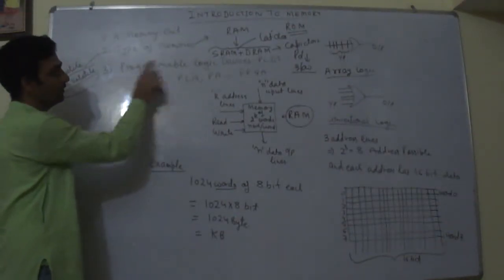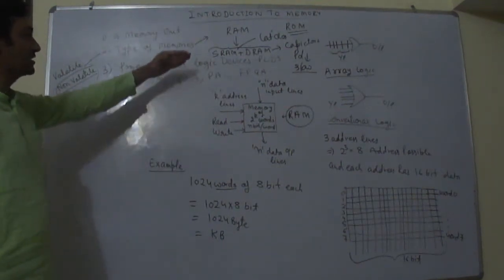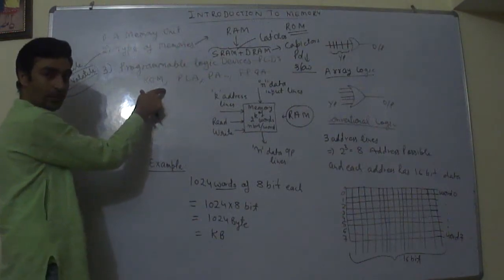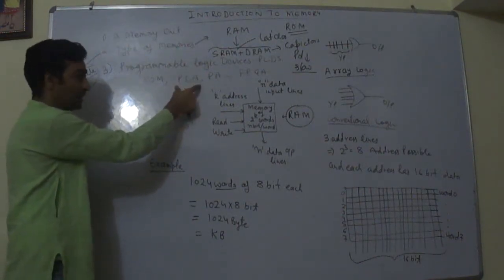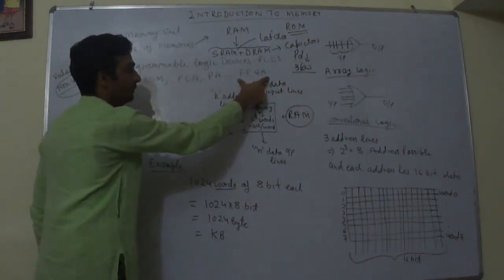Next is programmable logic devices called PLDs. So there are various types of programmable logic devices: random read-only memory, programmable logic array, programmable array logic, and field programmable gate array.